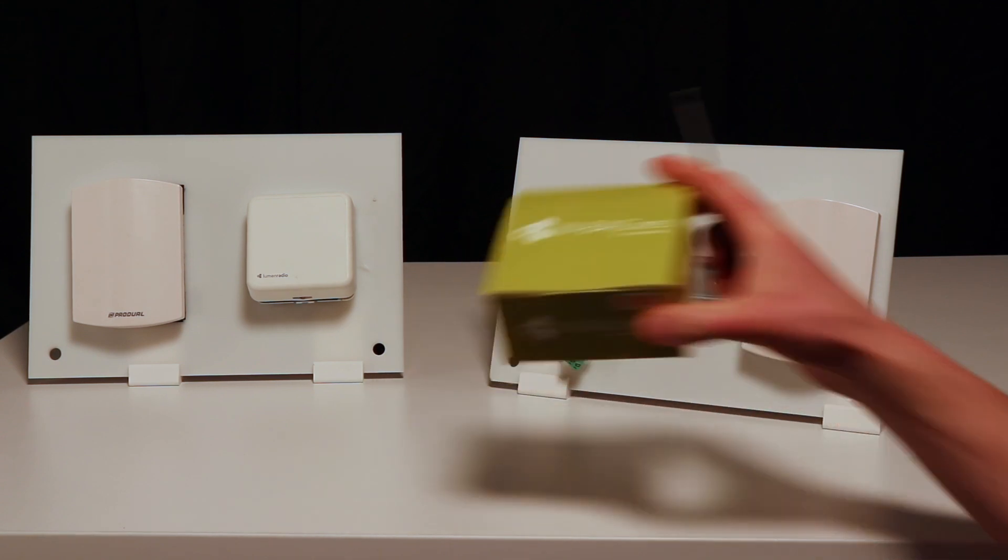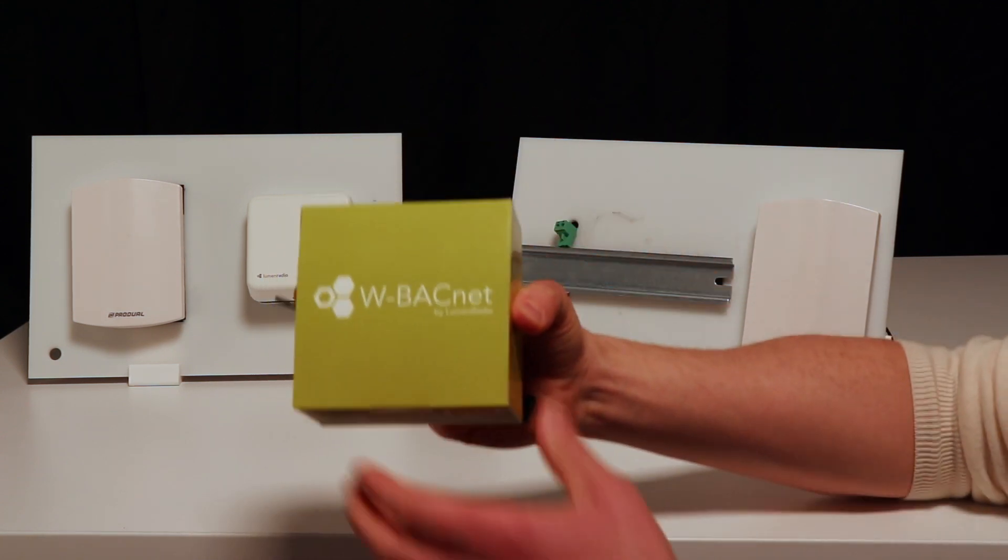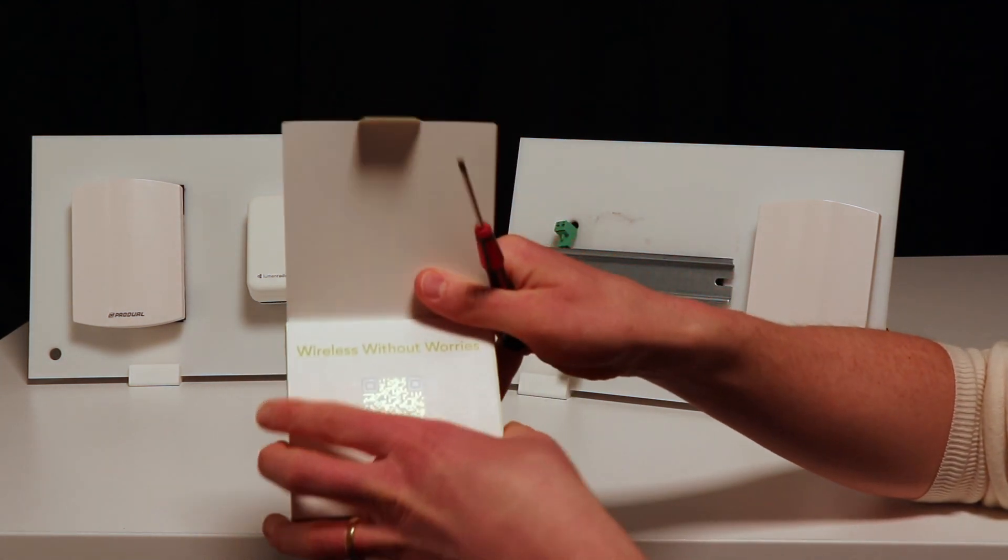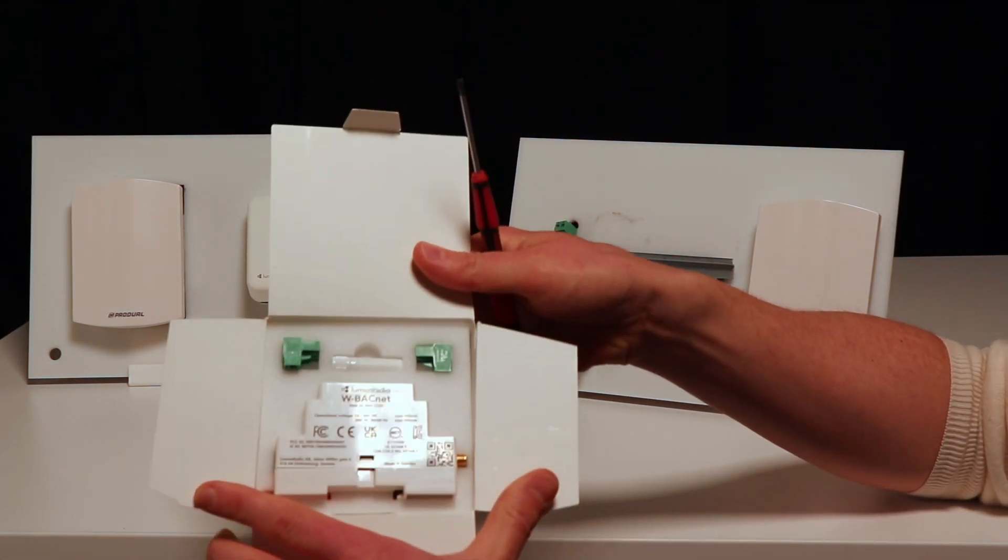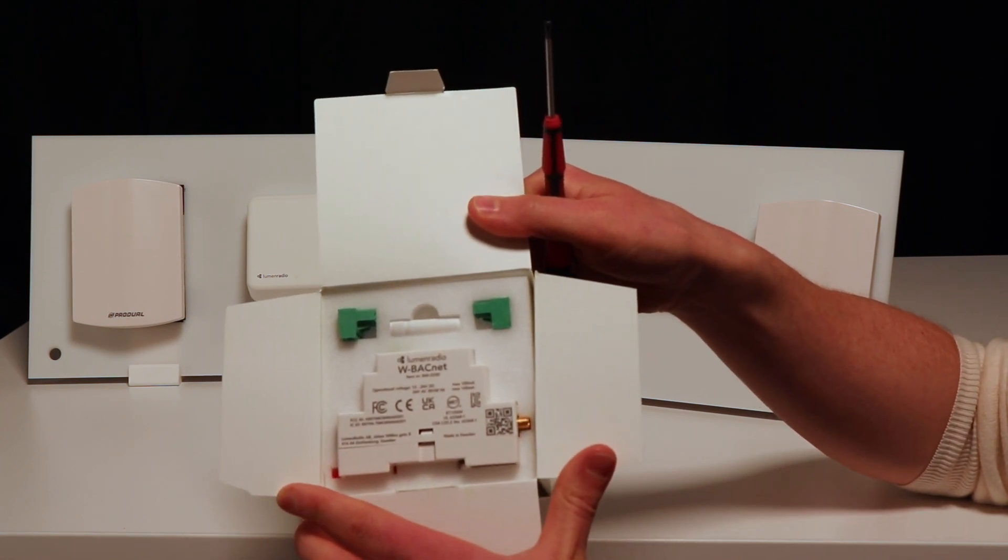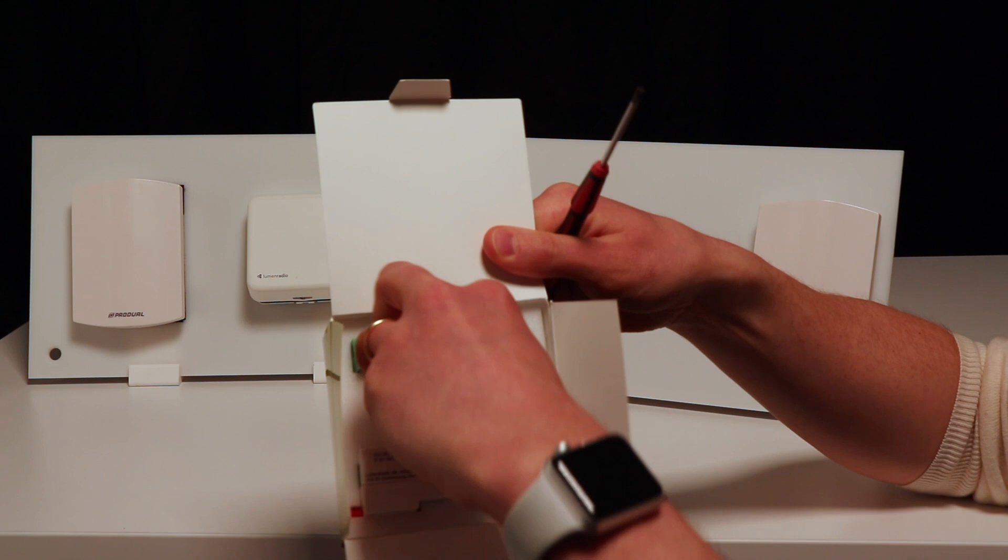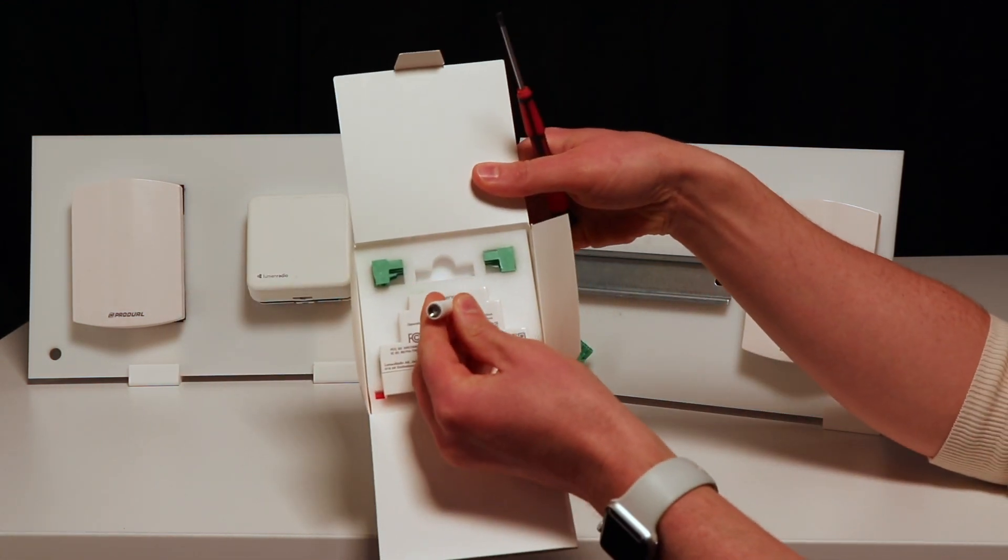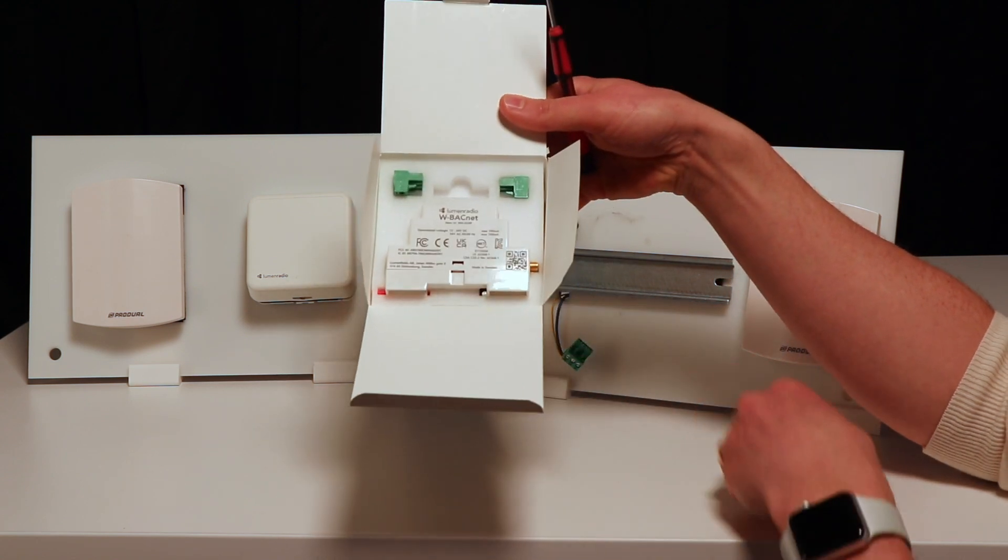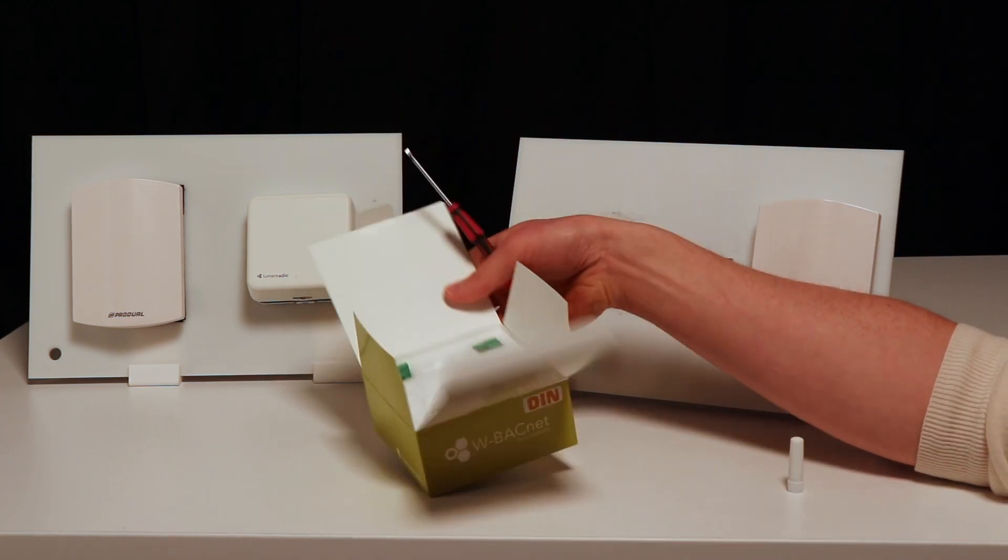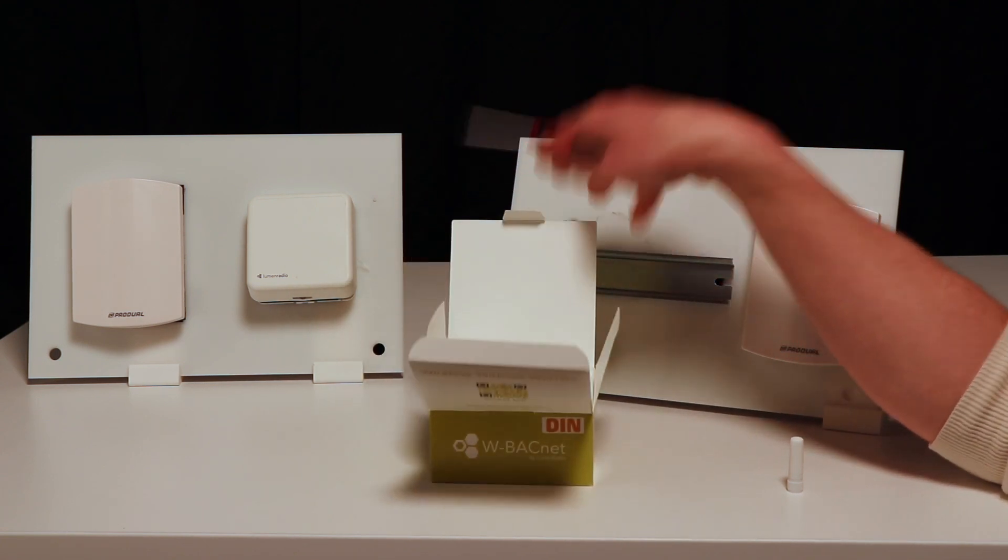The first thing you will see when you get the new wireless BACnet DIN rail is that we have an external antenna which you can actually replace if you want to. It's a normal RP-SMA connector and it makes it quite convenient if you want, for example, an IP65 antenna to put on an outdoor casing.